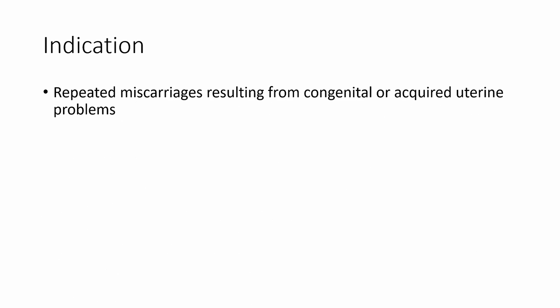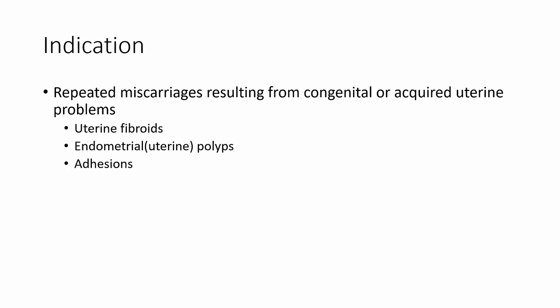Sometimes we perform Histosalpingiography in repeated miscarriage resulting from congenital or acquired uterine problems, like uterine fibroids, endometrial polyps, adhesion within the uterus, congenital problems like uterine anomalies that you already learned in embryology, and tumors of the uterus.